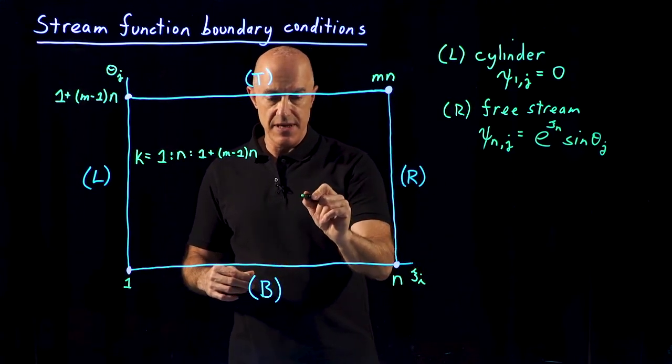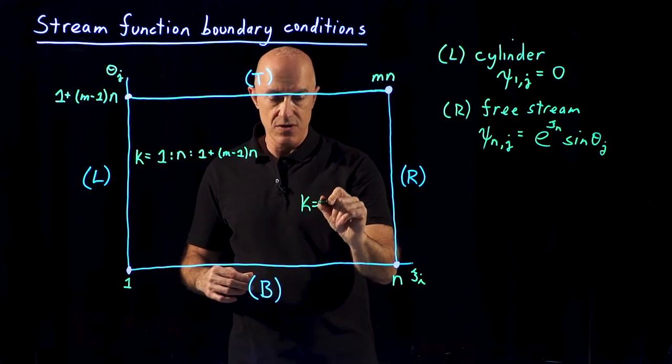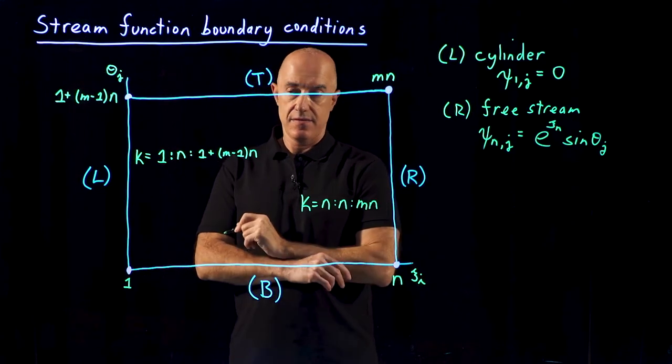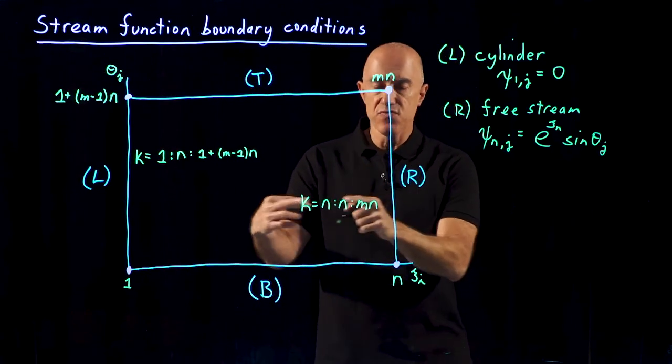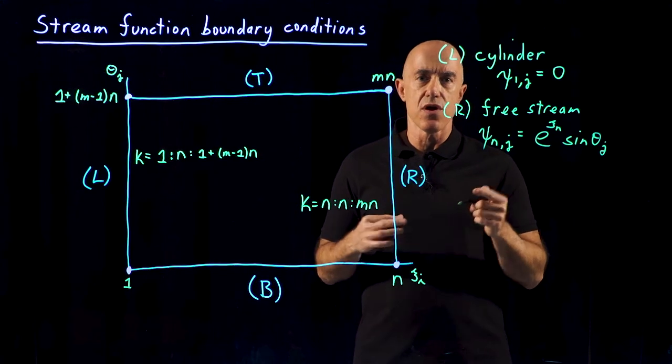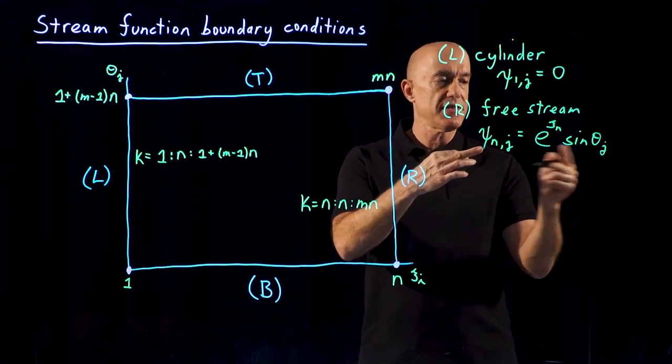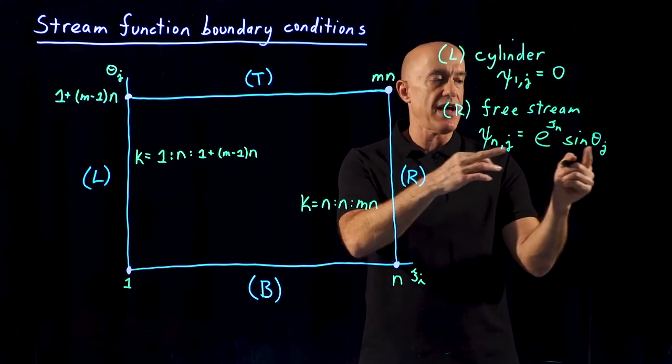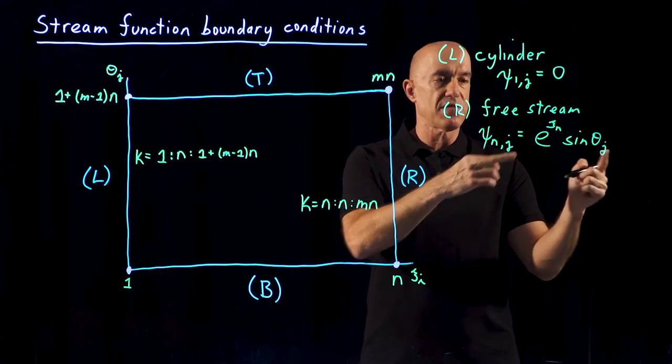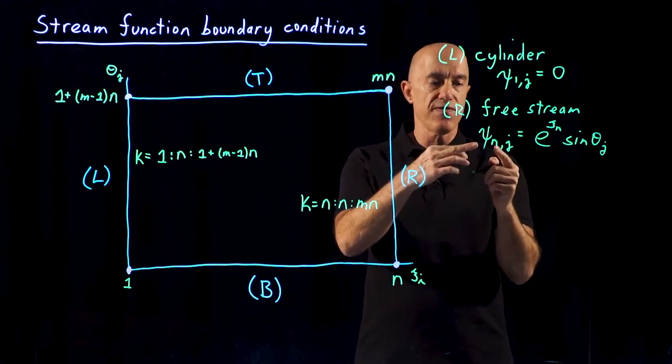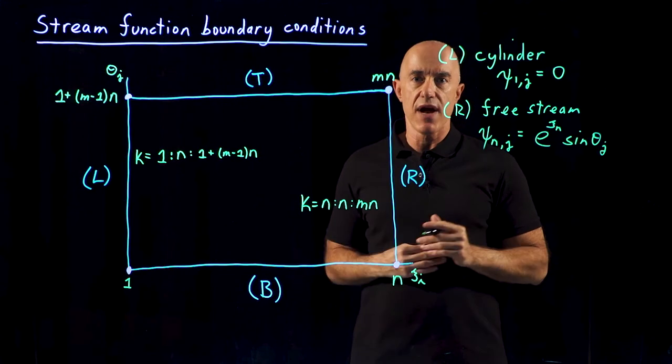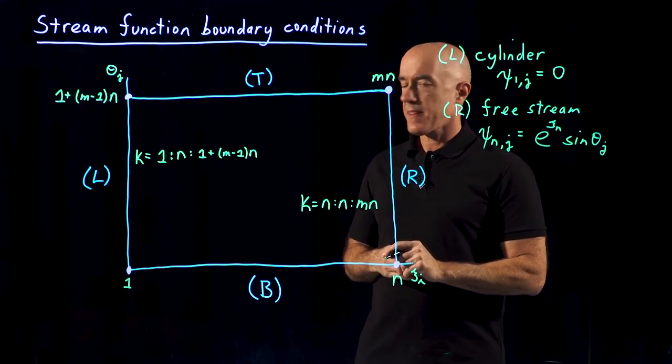So the value here would be k equals N, increment N, finish at MN. So for these rows of the matrix A, we need to replace by the corresponding rows of the identity matrix. But now this is an inhomogeneous boundary condition. So we have a non-zero right-hand side. And in those rows on the right-hand side, we have to put the free stream condition. So that will force Psi to equal the free stream boundary condition on the right-hand side of this boundary.